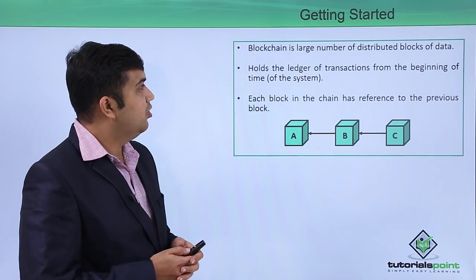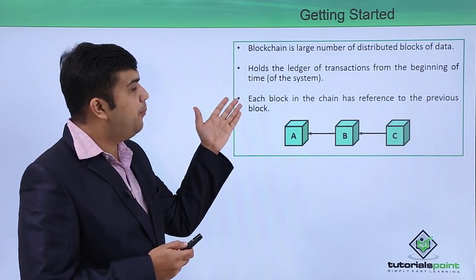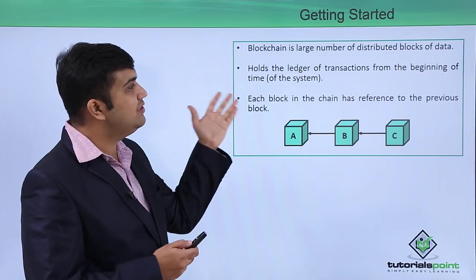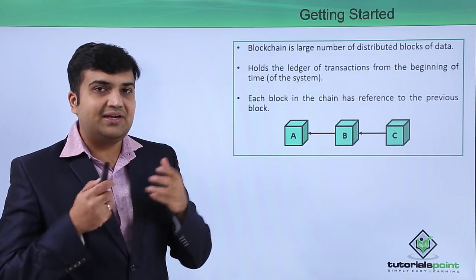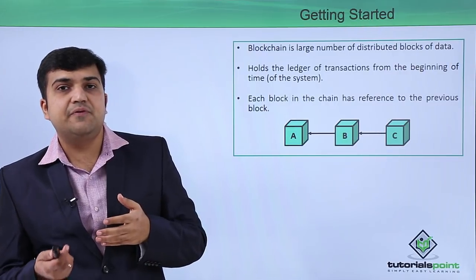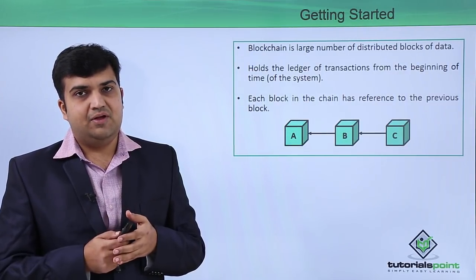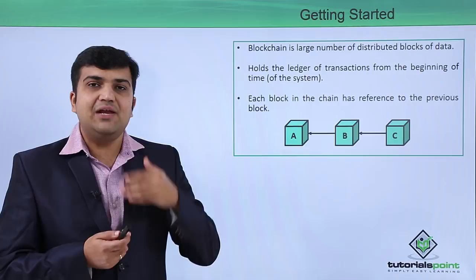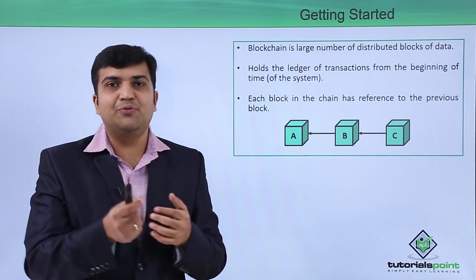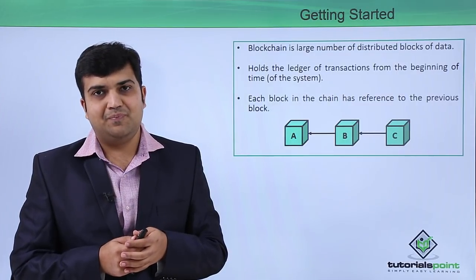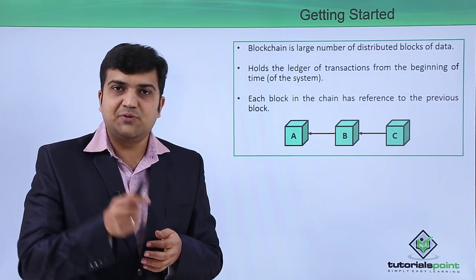The notable point about blockchain is that it holds the ledger of transactions from the beginning of time, that is, from the time the blockchain was first created. Let's say the time t equals zero for this blockchain is when the first block was added into the blockchain system. This block, which was added at time t equals zero, is called the genesis block.